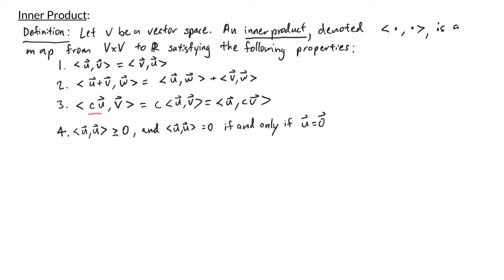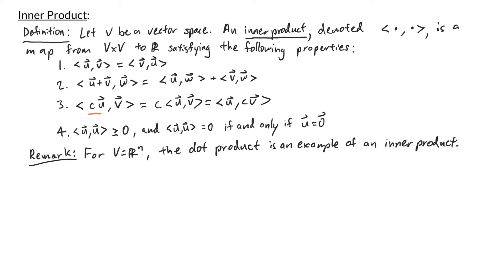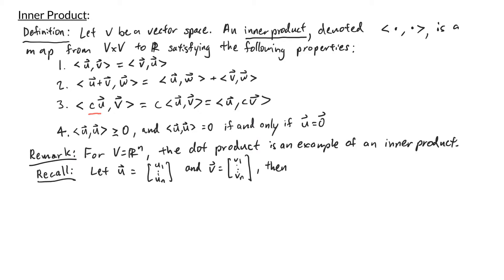It turns out that you've worked with inner products before. When working with the vector space v equals ℝⁿ, the dot product is an example of an inner product. As a reminder, we define the dot product as follows: if u is the vector u₁ through uₙ and v is the vector v₁ through vₙ, then u dot v is the transpose of u times v.